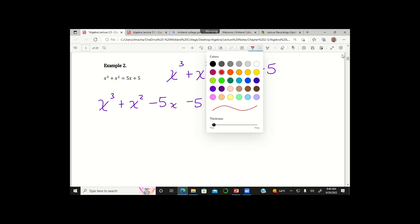And what I'm going to do next is pretty important. This is a brand new strategy here. I'm going to group the first two terms together like this, and then I'm going to write plus and I'm going to group the second two terms together like this, minus 5x minus 5.